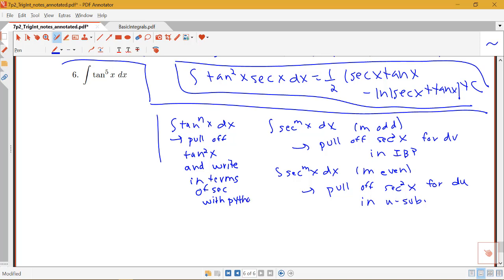So let's see how that goes in this particular example. We want to take tangent to the fifth and rewrite it as tangent cubed x tangent squared x dx.